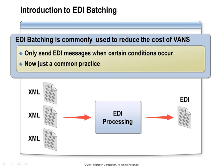It used to be that many companies relied on VANs — value-added network providers — to do a lot of their EDI processing. They didn't have the capabilities in-house that we have today with BizTalk. Those value-added networks provided services and charged based on transactions, so it was very common to group up documents and batch them to reduce costs. Today, it's just become common practice that people expect messages to be batched — they expect to receive them at particular times, or receive a batch with a certain number of messages or other thresholds.